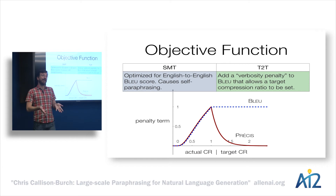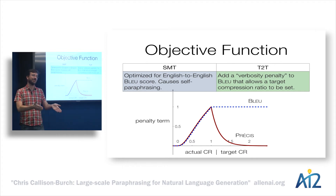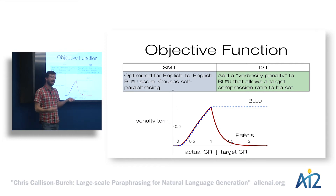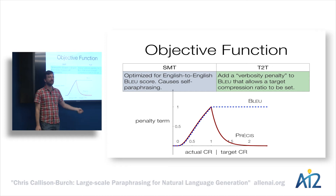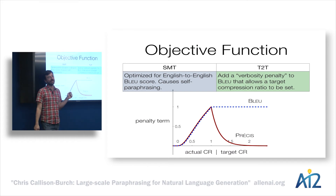In BLEU we have a brevity penalty, but that's actually the exact opposite of what we want when talking about compression, because we want the output to be shorter. My student Yuri came up with an adaptation of BLEU called PREC, which has a corresponding verbosity penalty. We look at a particular target compression ratio, and if we're off in either direction, we penalize the output.